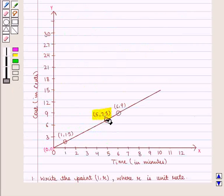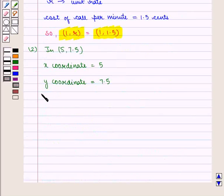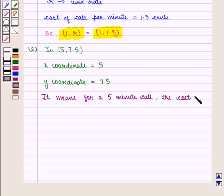Here we see that the x-coordinate is given by 5 and the y-coordinate is 7.5. It means for a 5 minute call, the cost is 7.5 cents.